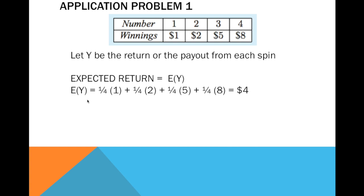This is the formula for the expected value or mean, which is equal to (1/4)(1) + (1/4)(2) + (1/4)(5) + (1/4)(8), and that equals four dollars — the expected payout. Notice that we use the probability. If you spin the spinner, it might fall on 1, 2, 3, or 4, so the probability of getting each number is 1/4. You have to know the probability first, then multiply it by the amount of winning, and take the summation.